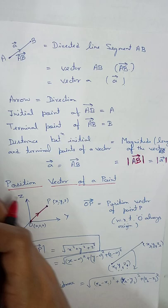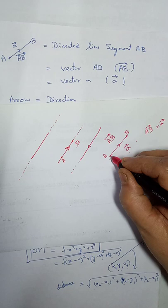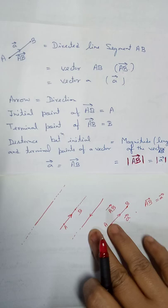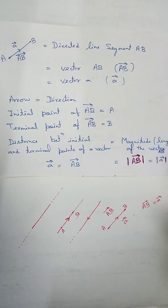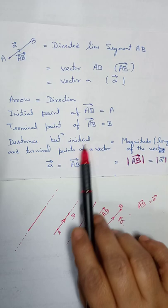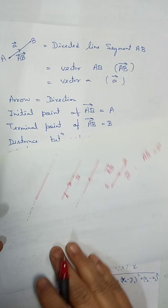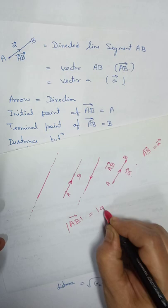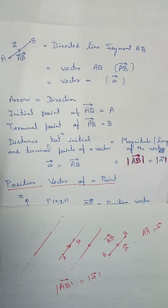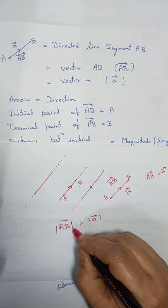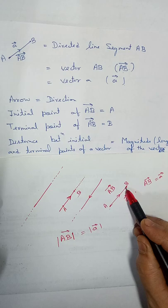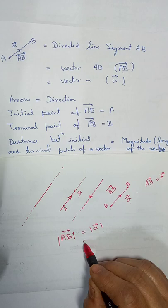This is our basic concept. Similarly, this is the initial point and this is the terminal point, and this is the arrow. The directed line segment is vector AB. One more thing: the distance between the initial and terminal point of a vector is called the magnitude of that vector. We denote magnitude with the mod sign because the distance between two points should always be positive.